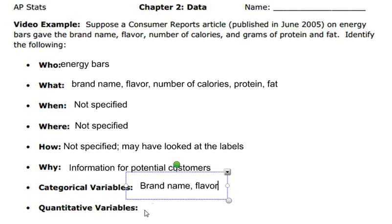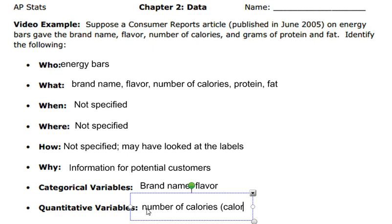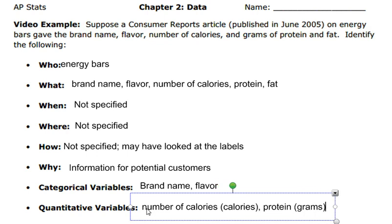Quantitative variables are quantities that have units. When we list out the quantitative variables, we list out their units also. The number of calories would be quantitative, and we measure calories in calories. Protein is also quantitative, and they said they're measuring that in grams as well.